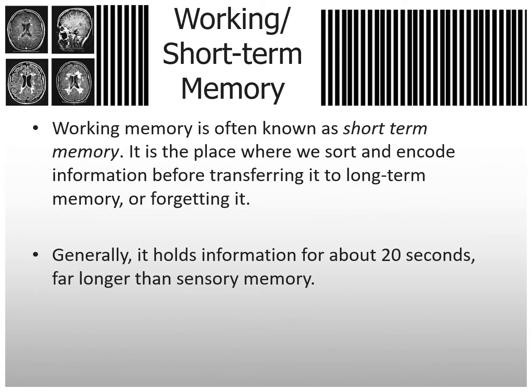Moving on to working or short-term memory. Working memory is often known as short-term memory. It is the place where we sort and encode information before transferring it to long-term memory or forgetting it. Generally, it holds information for about 20 seconds — far longer than sensory memory.